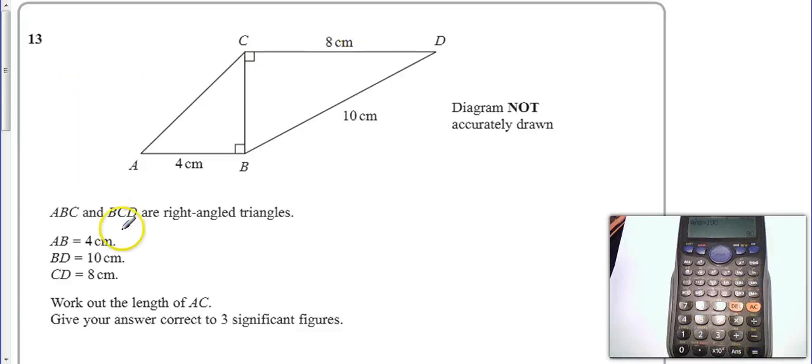Question 13 asks us to work out the length of AC. So that's the length from here up to here, this length along. That length there.